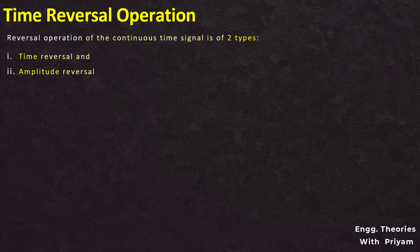A continuous time signal (CTS) is a function of independent variable t and it is defined for all values of this independent variable t. A continuous time signal can be represented by X, where X is the dependent variable and t is the independent variable.